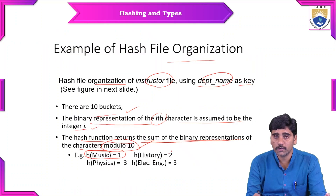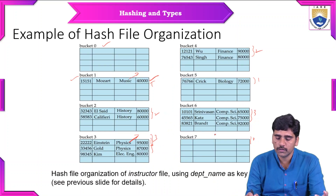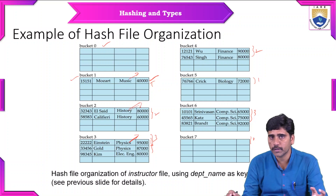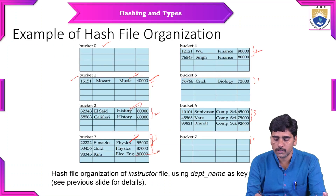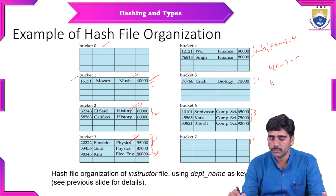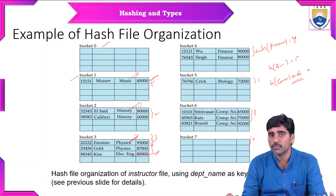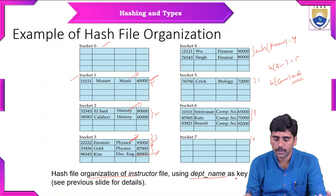Hash function of history will be located at bucket 2. Electrical engineering will be located at bucket 3. Each bucket has its own values. Finance is in the 4th bucket, biology is in the 5th bucket, and computer science is in the 6th bucket. Each bucket has its own file organization with the help of their search key values — this is hash file organization of the instructor file using department name as a key.